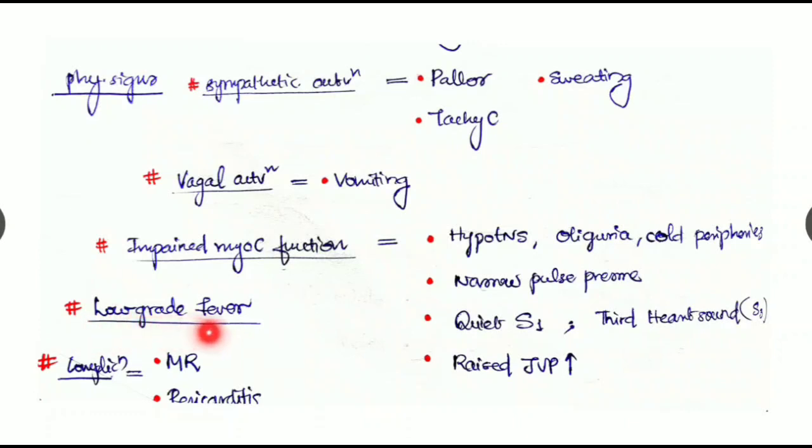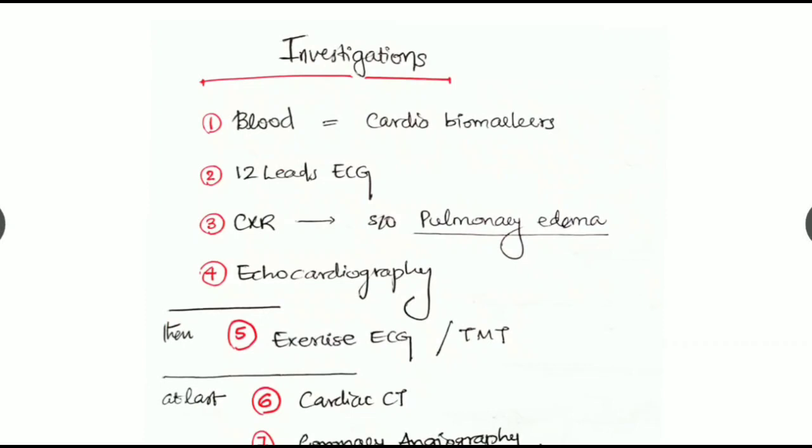Due to reduced cardiac output: narrow pulse pressure, quiet S1 first heart sound, appearance of third heart sound S3, and raised JVP due to reduced performance of the myocardium. There can be low grade fever and complications like mitral regurgitation, pericarditis, etc.